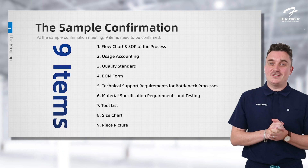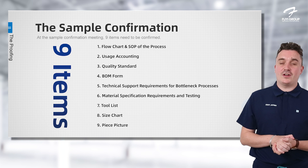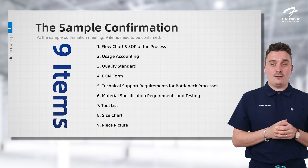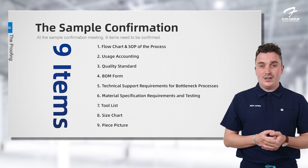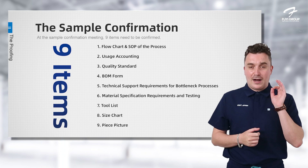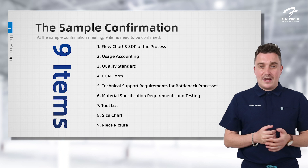Once the sample is confirmed and we can move forward, there are a few more internal steps we must take. First is a flow chart and SOP process for how we make the product — this will also be shared with you, though it's essentially an internal process. Second is usage counting, looking at the materials, how much we need, and how much we can spare. Third is setting a quality standard — high standards for the products you need and we want to make for you. After that, we complete a BOM form, which is an important internal document.